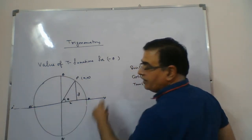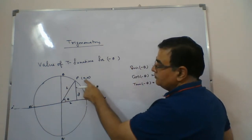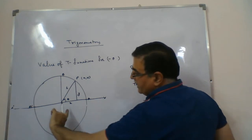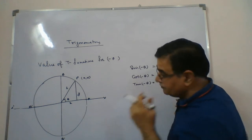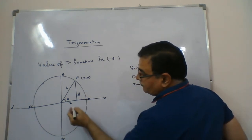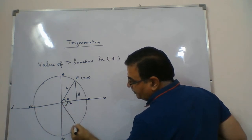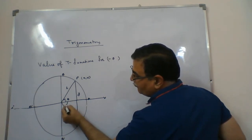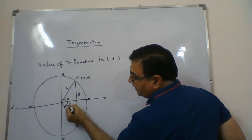We take a circle whose radius is 1. The point is (x, y), so this is x and this is y. Since the angle is taken in an anti-clockwise direction, we say this angle is theta. Now if I rotate this ray in the clockwise direction, the angle was theta but now this will be minus theta.